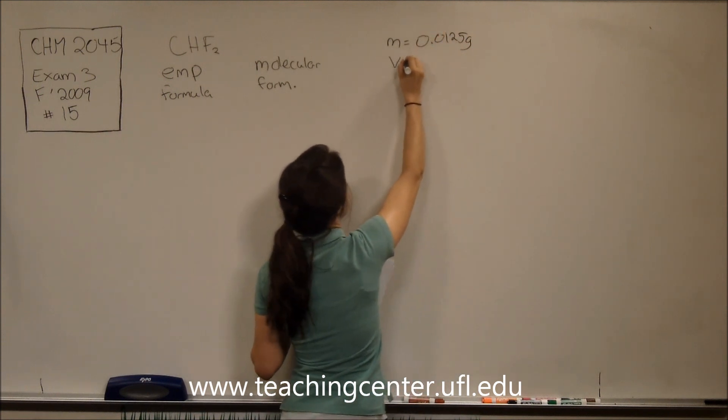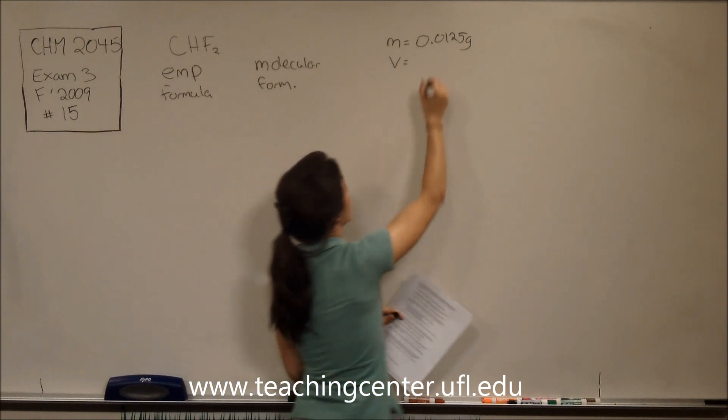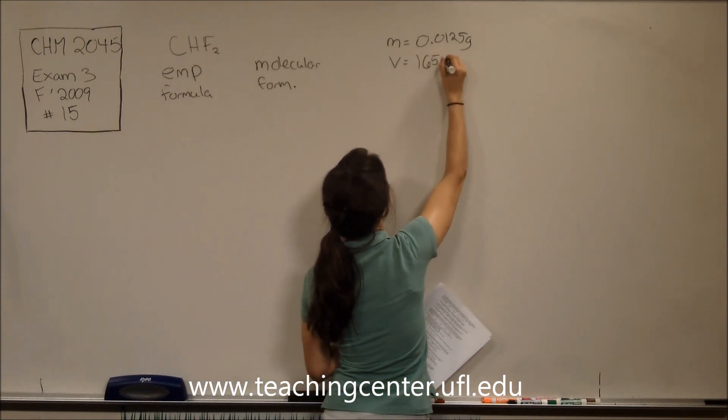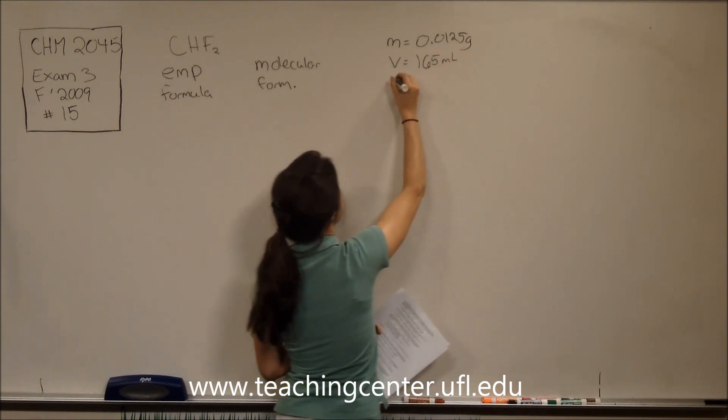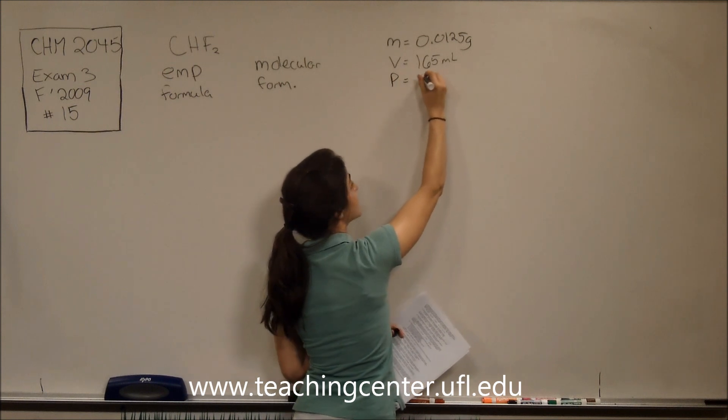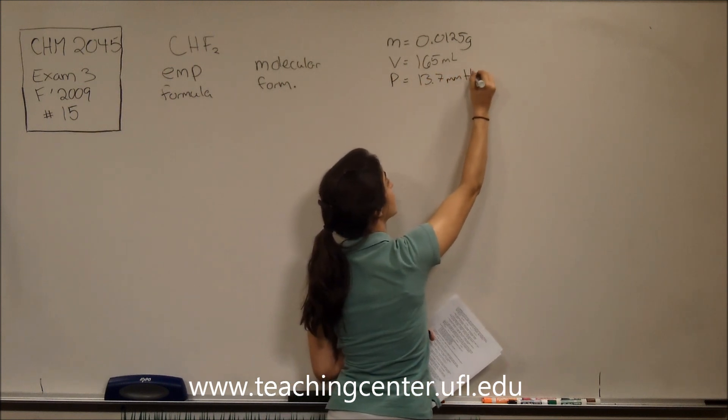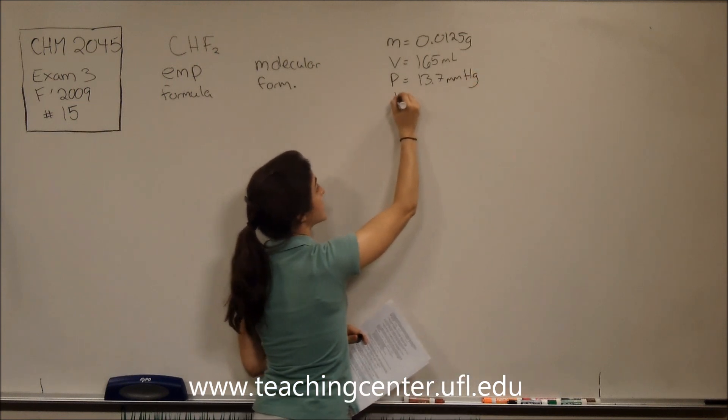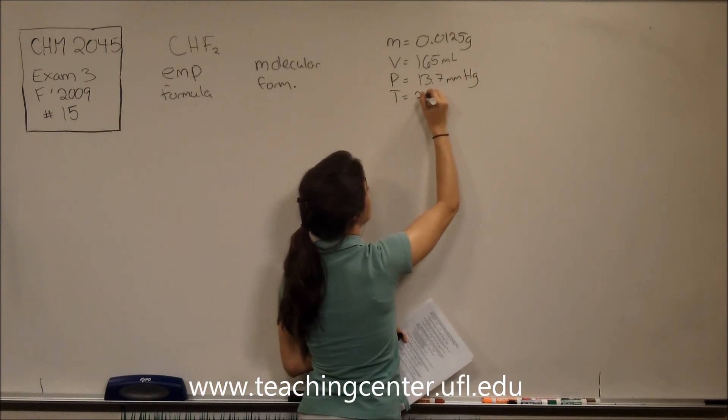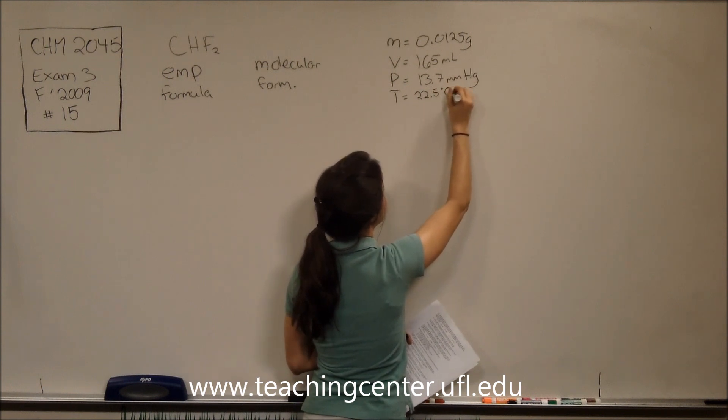The volume of the container, which is 165 milliliters. The pressure, which is 13.7 millimeters of mercury, and a temperature, which is 22.5 degrees Celsius.